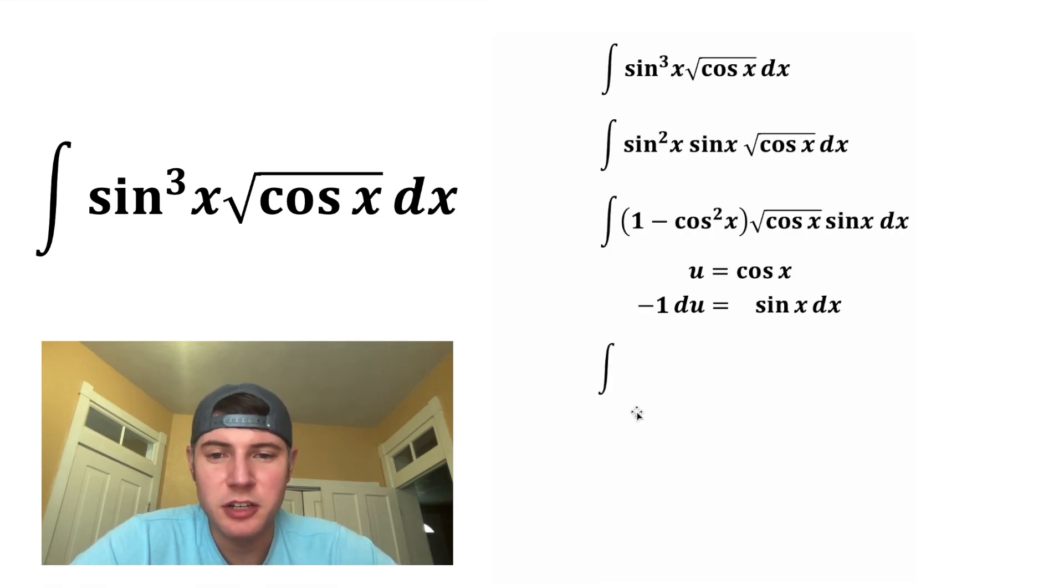This one minus cosine squared is going to become one minus u squared. The square root of cosine x is going to become square root of u. And this sine x dx is going to be negative one du. So I'll put the negative one in front and the du right here. And now we've gotten rid of all the trig stuff.